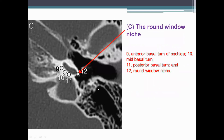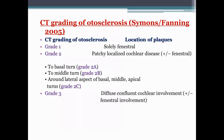The next area of interest is at the level of the round window niche. Area 9 is the anterior basal turn of the cochlea, area 10 is the medial basal turn, and area 11 is the posterior basal turn of the cochlea. Area 12 is the round window niche. These three levels are the key areas to examine when looking for otosclerotic foci in the CT scan of the temporal bone.